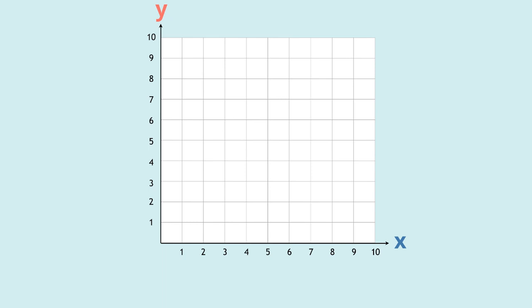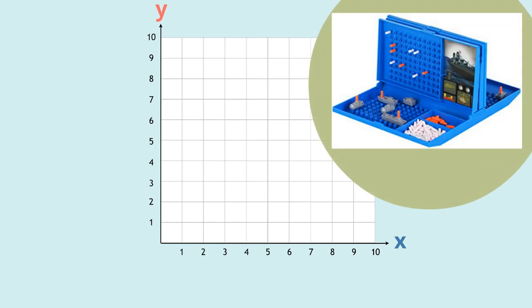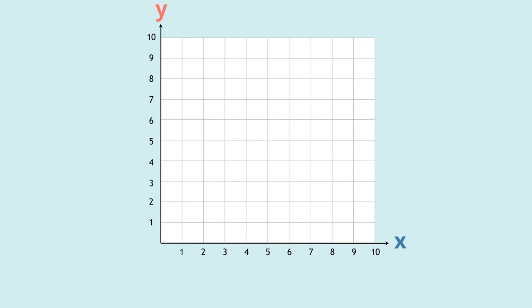Well the reason we have numbers on both the x and the y-axis and we have no labels so we know it's not a graph, is because this grid is used to plot coordinates. If you've ever played the board game battleship you are already used to using coordinates, you just didn't realize it. The numbers on the x-axis and the y-axis are used to find a specific point on the grid.